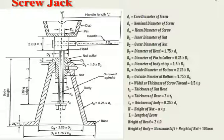Starting with the nomenclature: dc is the core diameter of the screw. d₀ (d-naught) is the nominal diameter of the screw.